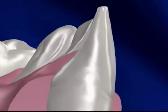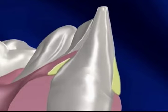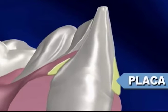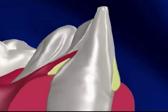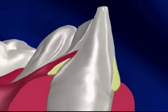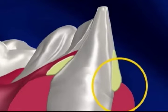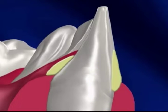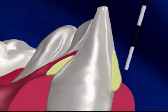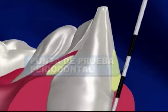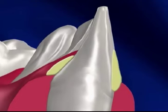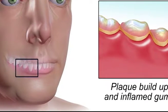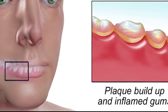La gingivitis es una enfermedad bucal generalmente bacteriana que produce inflamación y sangrado en las encías a causa de residuos de alimentos que se quedan alojados entre los dientes. Su origen se encuentra relacionado con los efectos a largo plazo de los depósitos de placa en los dientes, que es el material pegajoso formado de bacterias, moco y residuos de alimentos que se acumulan en los dientes. La placa y el sarro irritan e inflaman las encías, provocando que éstas se tornen más sensibles y que produzcan sangrado.